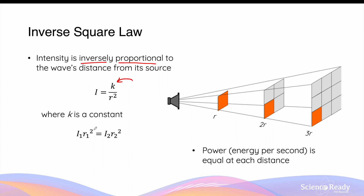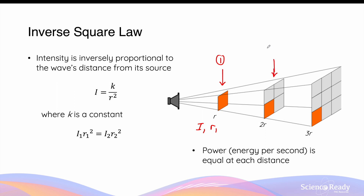Using that constant, we can write a second equation: I₁ × r₁² = I₂ × r₂², where I₁ is the intensity at point 1 and r₁ is its distance from the source, and I₂ and r₂ correspond to a second measurement point. For example, taking point one at distance r from a loudspeaker gives intensity I₁; taking point two at distance 2r gives intensity I₂ at distance r₂.